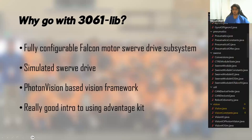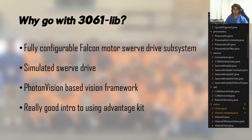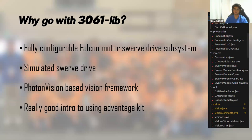The top level view of what the 3061 lib is: the main part is the Swerve library — it's a Falcon-based Swerve library. It also has a simulator Swerve drive, which is really nice, so we're able to simulate driving as well as build simulators for elevators. It has a PhotonVision-based vision framework, which is a good introduction to vision. The biggest thing we like is that it combines AdvantageKit into its code, making it a really good starting point for teams not sure about AdvantageKit.